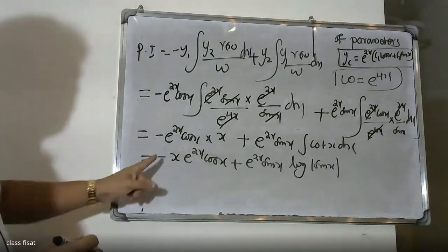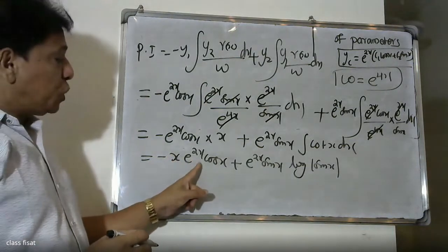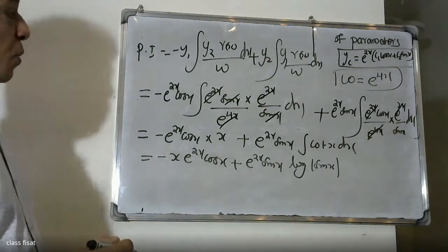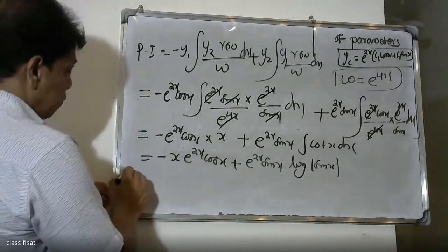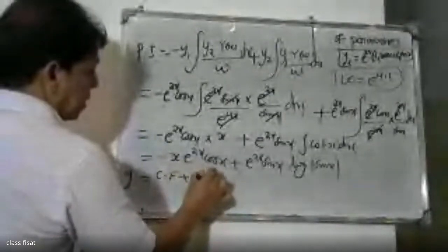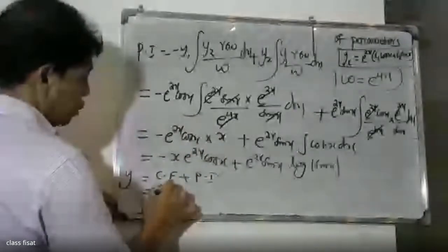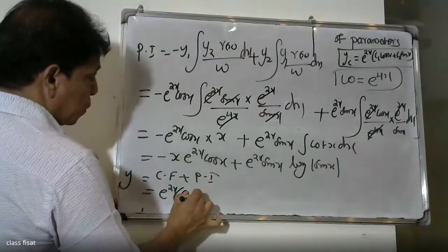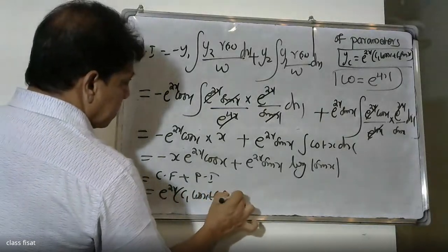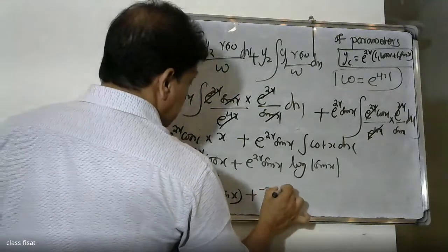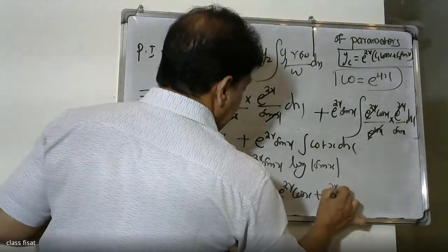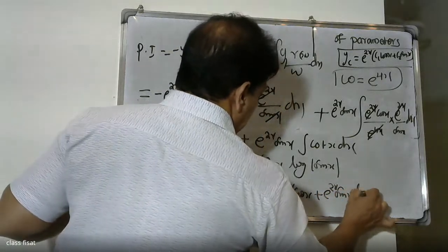The particular integral yp = -x · e^(2x) cos x + e^(2x) sin x · log|sin x|. The general solution is y = complementary function + particular integral, that is y = e^(2x)(c1 cos x + c2 sin x) - x · e^(2x) cos x + e^(2x) sin x · log|sin x|.